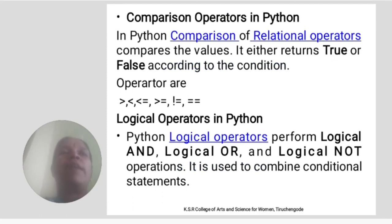Comparison operators in Python. In Python, comparison or relational operators compare the values. It either returns true or false according to the condition. Operators are: less than, greater than, less than or equal to, greater than or equal to, not equal to, equal to.